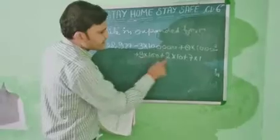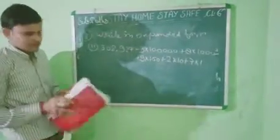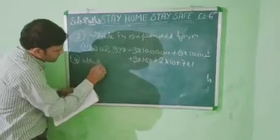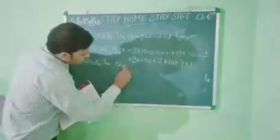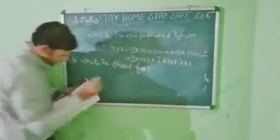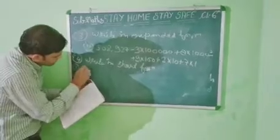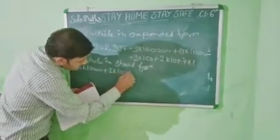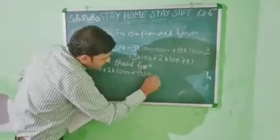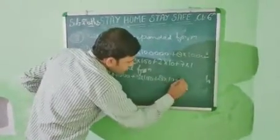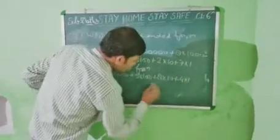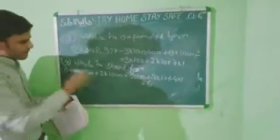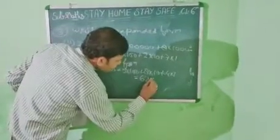Question number four: Write in short form. Question number one: 6 × 10,000 plus 2 × 1,000 plus 5 × 100 plus 8 × 10 plus 4 × 1 equals 60,000 plus 2,000 plus 500 plus 80 plus 4 equals 62,584.